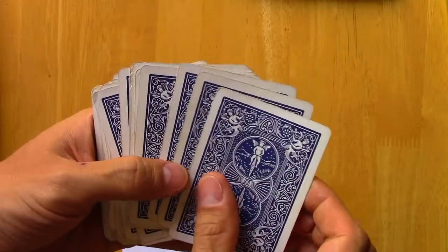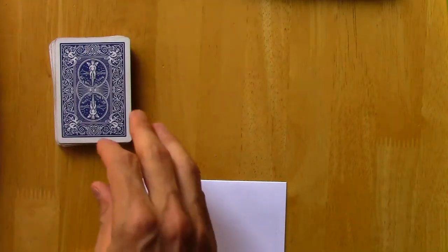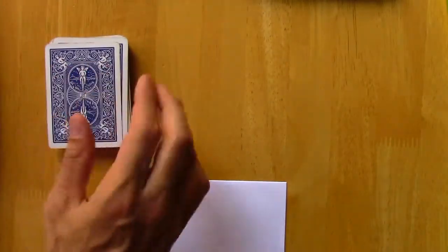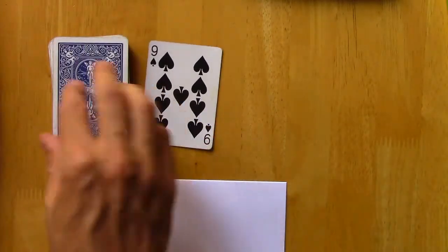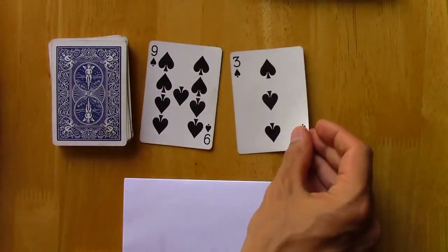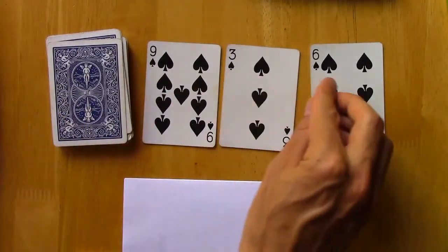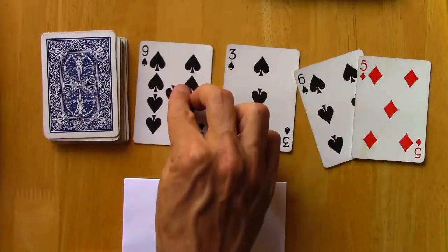And we take an IID sample from the population. I'm going to take a sample of size four. I already shuffled, so I'll just take the top four cards. 9, 3, 6, and 5.